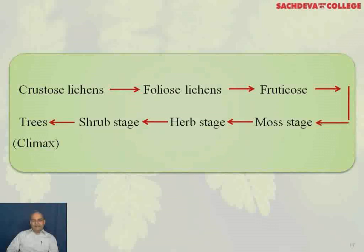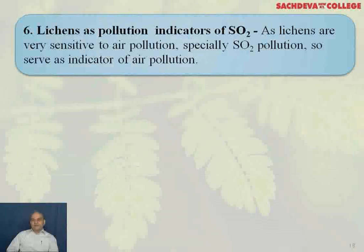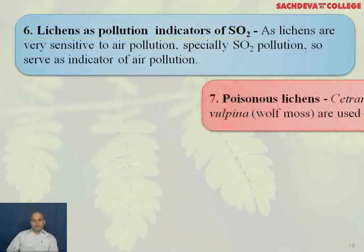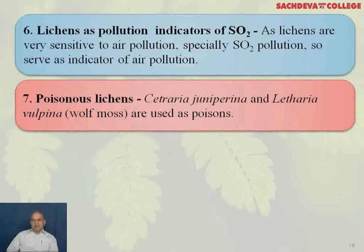Lichens as pollution indicators, particularly of SO2. Lichens are very sensitive to air pollution, especially SO2 pollution, so they serve as indicators of air pollution. Poisonous lichens: Cetraria juniperina and Letharia vulpina, called wolf moss, are used as poisons.